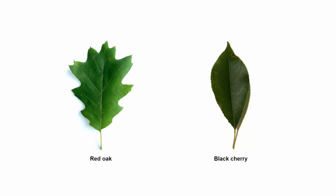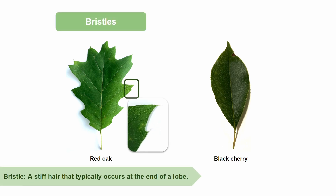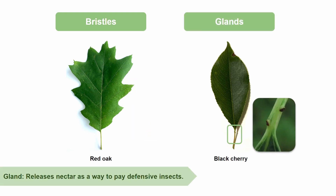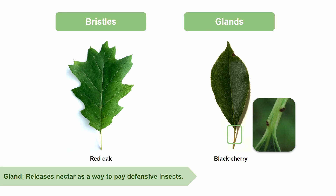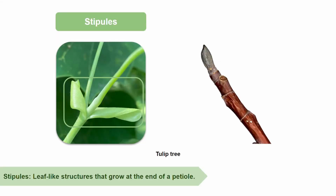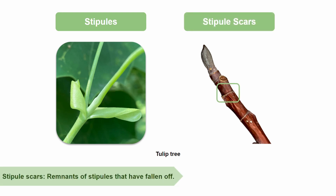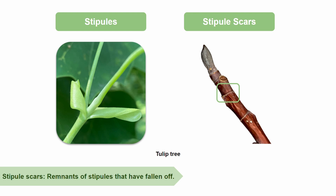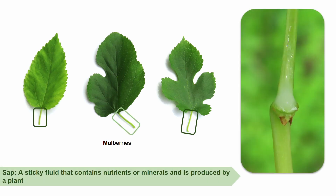There are some additional traits that leaves may have that we as plant identifiers could put to use. Some leaves, like those of Quercus rubra, otherwise known as red oak, have bristles at the ends of their leaves. A bristle is a stiff hair that typically occurs at the end of a lobe. Another trait that is less common is glands. A species that has glands is Prunus serotina, otherwise known as black cherry. Glands release nectar as a way to pay insects that eat herbivorous insects that could be harmful to the cherry tree. Stipules are a pair of leaf-like structures that grow at the end of a petiole. The stipules pictured are that of Liriodendron tulipifera, or the tulip tree. After they fall off, they leave behind a stipule scar all the way around the twig, which can be useful for identifying the twig in the wintertime. Some species, such as mulberries, have leaves that leak a white milky sap when they're broken. Sap is a sticky fluid that contains nutrients or minerals and is produced by a plant. This can be useful for identifying some plant species.